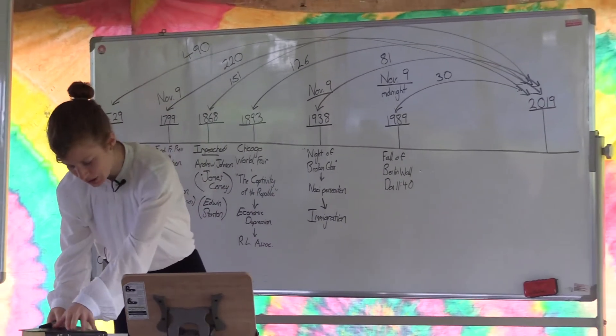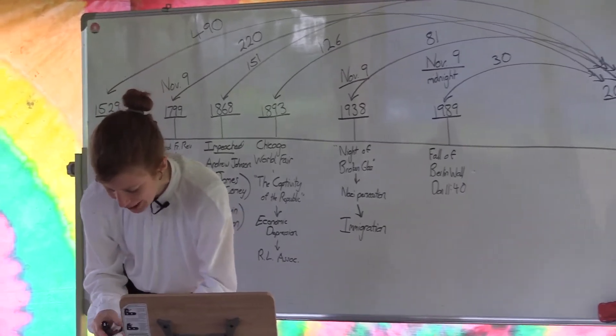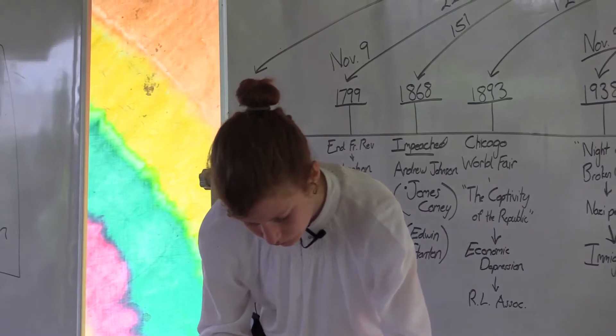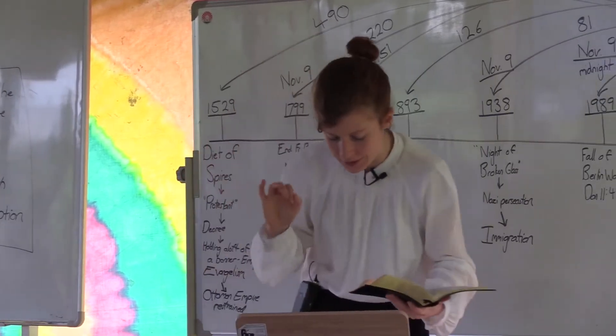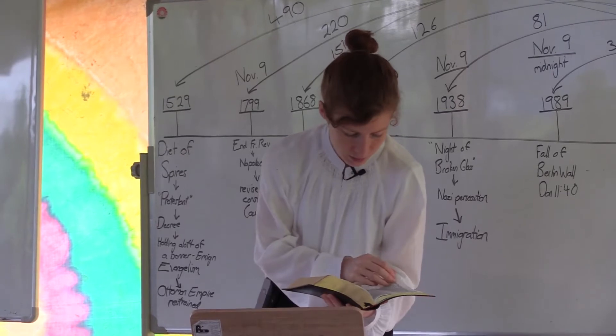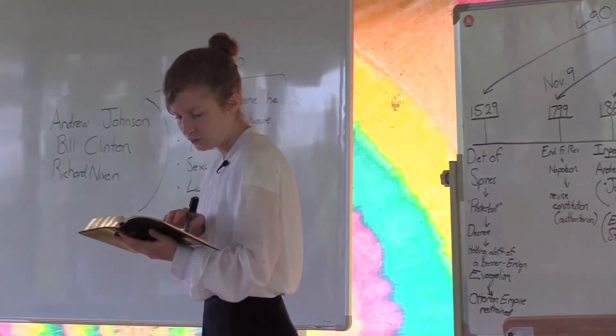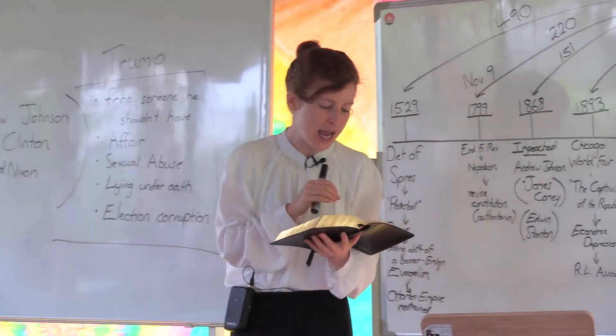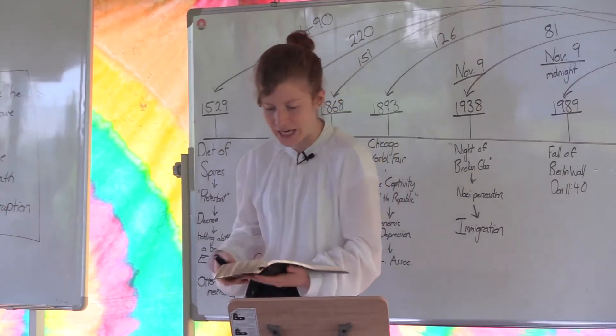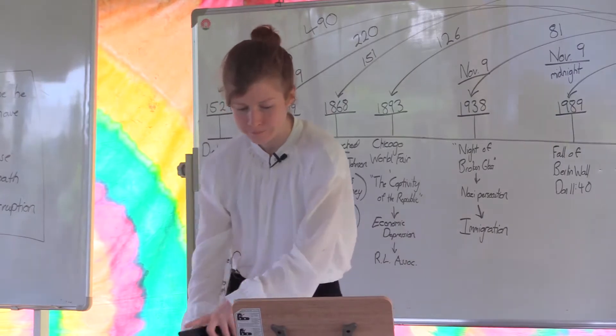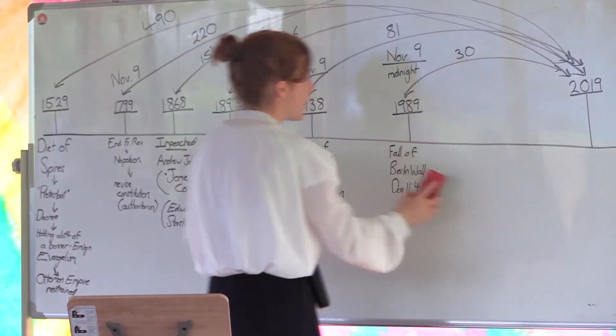If you're turning your Bibles to Numbers chapter 4, we find this same principle in Numbers chapter 4. We could go to seven different verses, seven verses to prove this point. We'll just do the first one. Numbers 4 verse 3. From thirty years old and upward even until fifty years old, all that enter into the host to do the work in the tabernacle of the congregation. When did a priest go to work? At thirty years old.